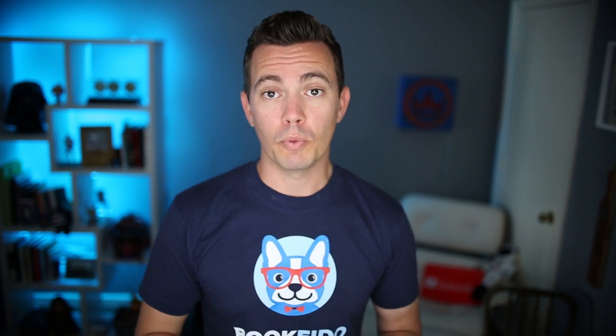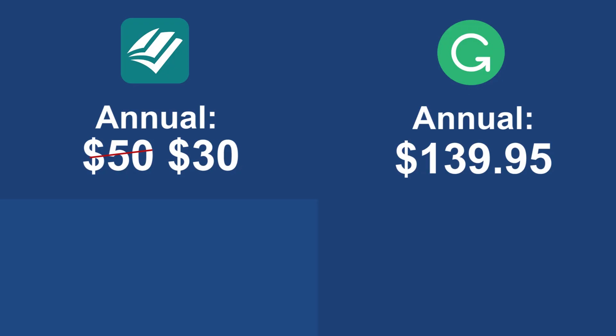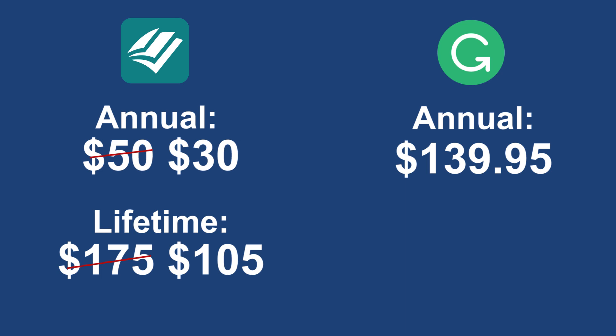Now that we know how they integrate and the differences between those integrations, let's look at pricing. I actually have a 40% discount you can use on ProWritingAid — the numbers you're going to see use that coupon, which you can find in the link in the description below in my ProWritingAid review. Using that 40% coupon, you can get one year of ProWritingAid for only $30, whereas Grammarly is $139.95. Ouch. But what I love most about ProWritingAid's pricing is they also have lifetime access — at only $105 with that coupon code, that's actually cheaper than one year of Grammarly. So I'm giving two checkmarks to ProWritingAid: they're cheaper annually and they offer lifetime access for one price.